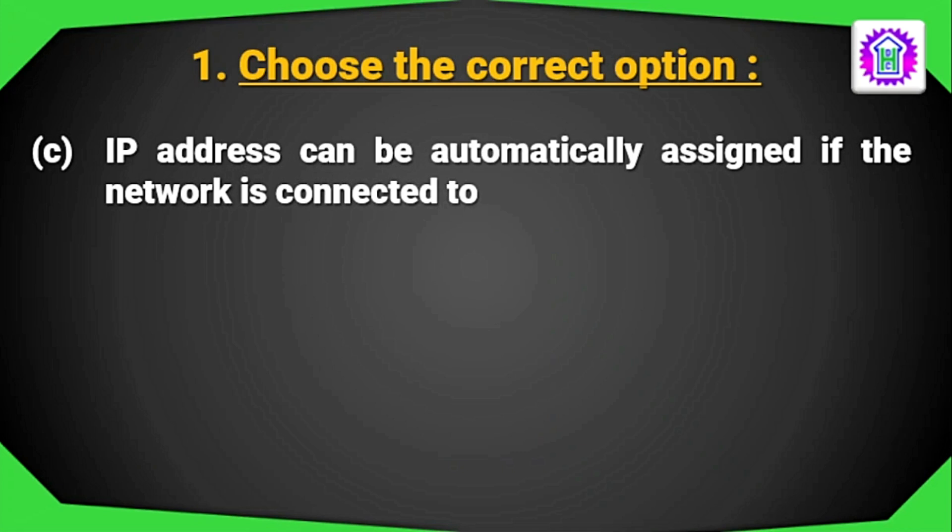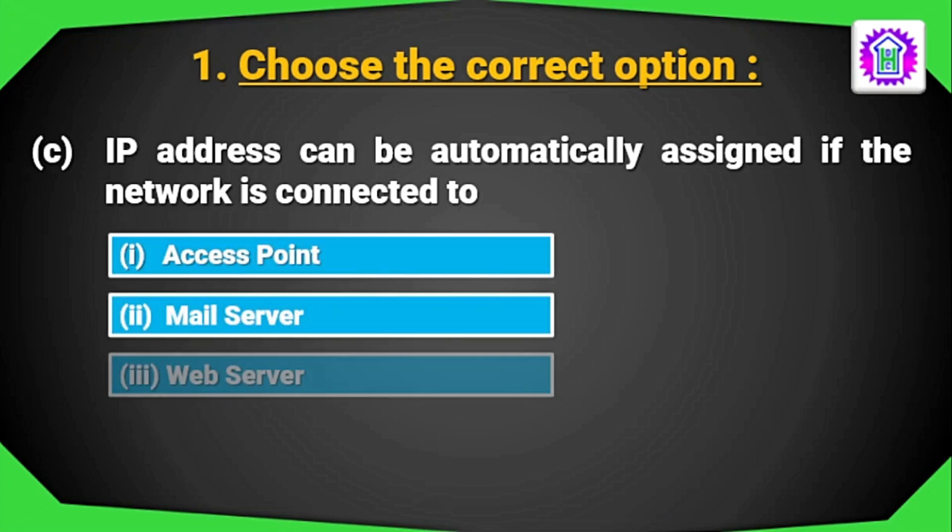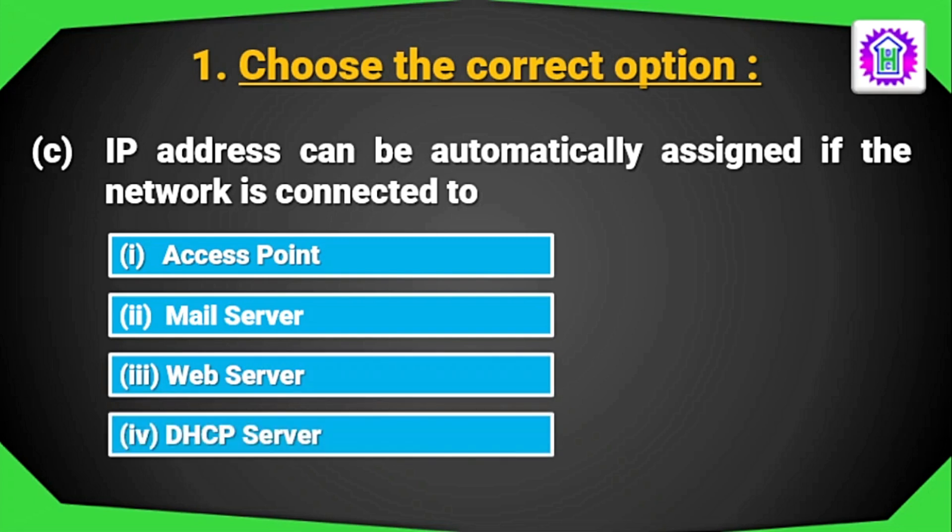Question number C, IP address can be automatically assigned if the network is connected to. The options are Access Point, Mail Server, Web Server and DHCP Server.